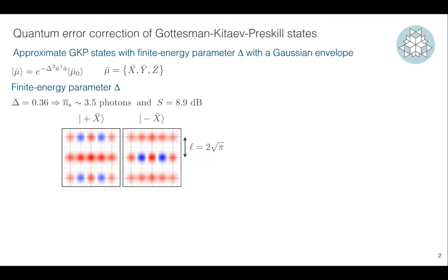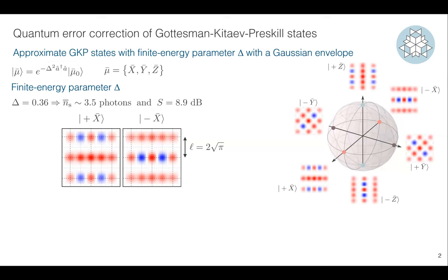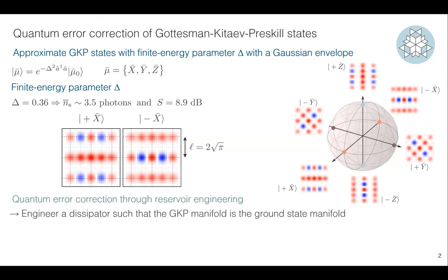To give you an idea in terms of number of photons and squeezing, this corresponds to about 3.5 photons and a squeezing of 9 dB. So this is a relatively small GKP state. Even though delta is quite large, we can still distinguish quite well between the two logical states plus X and minus X, and with that you can build up the GKP qubit, where we see all the cardinal states.